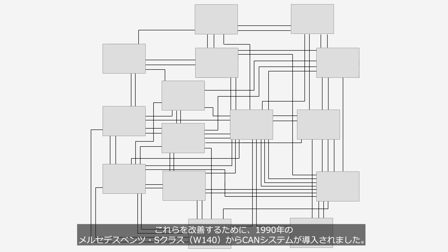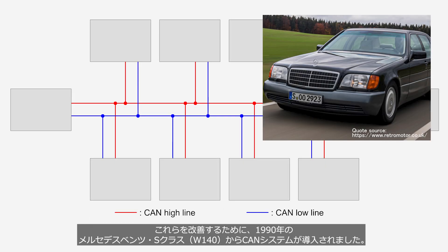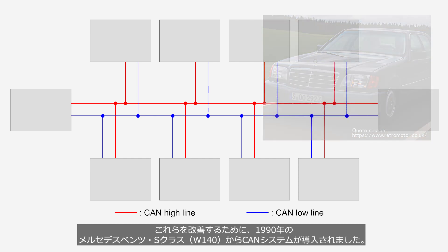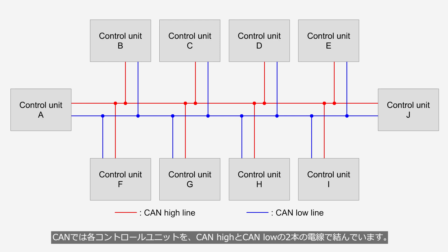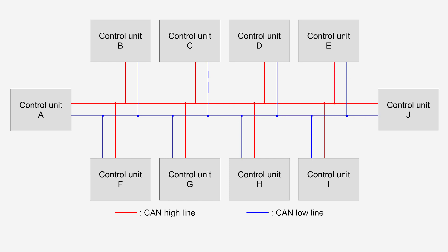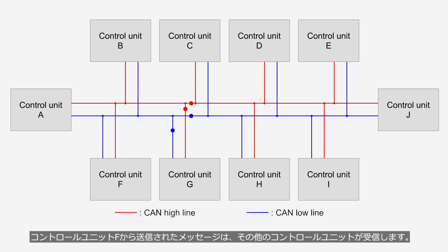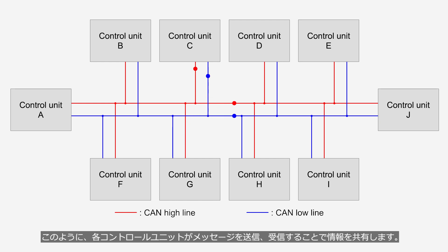To improve these issues, the CAN system was introduced starting from the 1990 Mercedes-Benz S-Class Type W140. In CAN, each control unit is connected by two wires, CAN high and CAN low. The message transmitted from control unit A is received by all other control units, and each control unit shares information by transmitting and receiving messages.